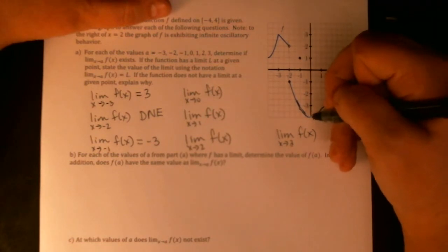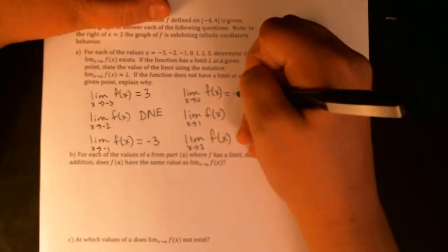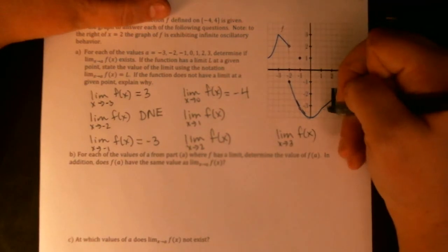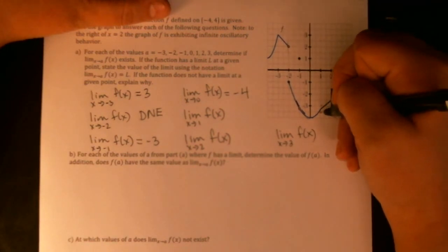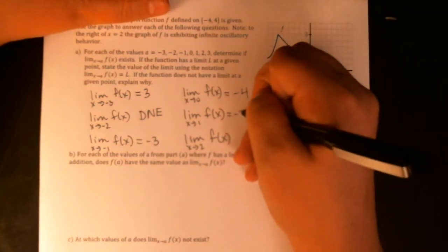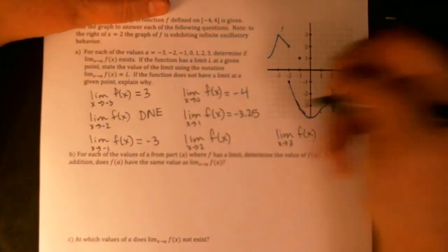Zero, y is getting close to negative four. At one, what would I say this is? This is negative three. This is negative three point five. So it looks like negative three point two five to me.